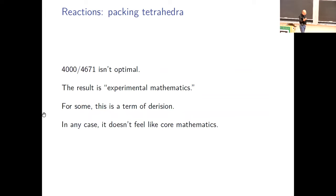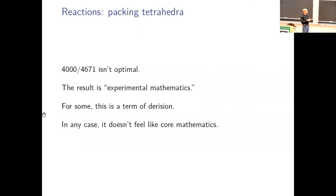In the essay, I run through mathematicians' reactions. It's easiest to dismiss the tetrahedra problem because there's nothing special about 4046/71 — it's not optimal, you just muck around and find the best packing you can. Mathematicians often feel this is 'experimental mathematics,' sometimes used as a term of derision. But it doesn't have to be — there's something exhilarating about thinking about packing tetrahedra. How do you even start thinking about packing tetrahedra efficiently into space?